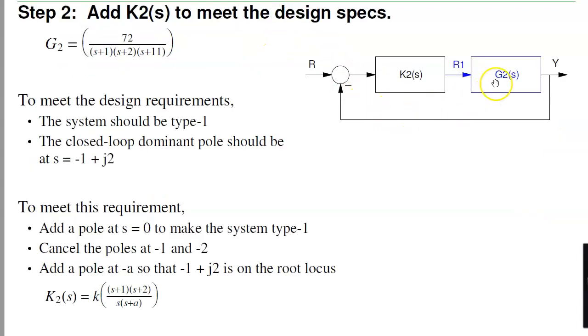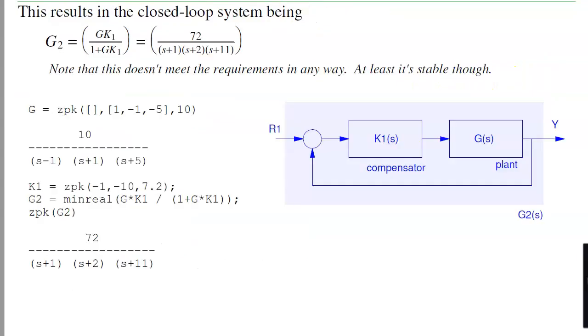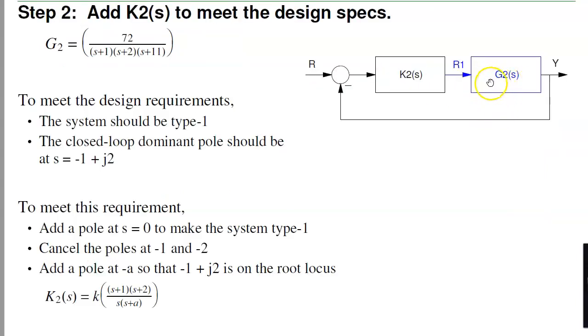Now that G2 is stable, let's design K2. This guy right here, G2, consists of all this. Mathematically, he doesn't care. How I get G2 is just I've got G2. That's my net system. Find K2 to meet your design specs. Meaning I want it to be type 1 and want to place the closed loop dominant pole at minus 1 plus J2.